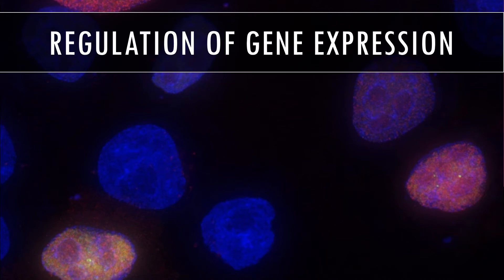Hello, everybody. In today's video, we're going to discuss AP Biology Topic 6.5 on the regulation of gene expression. We're going to look at the variety of mechanisms that cells use to regulate the expression of genes contained within their genome and the differences between prokaryotic and eukaryotic cells.